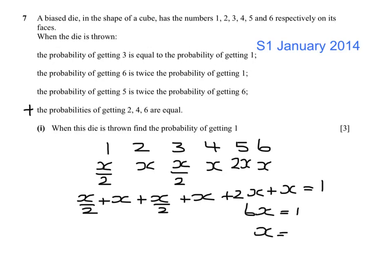So X would be 1 sixth, which means the probability of getting a 1 is 1 twelfth.